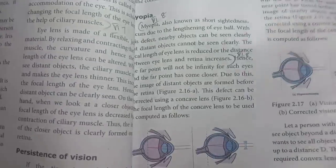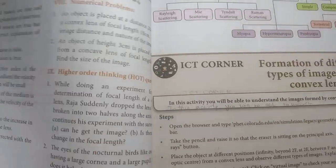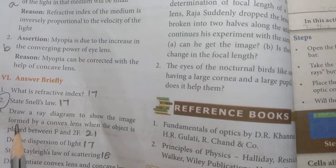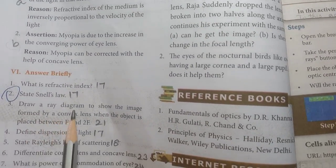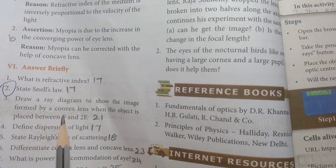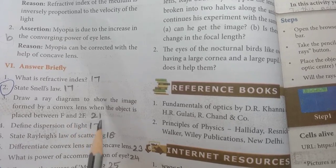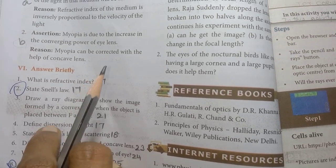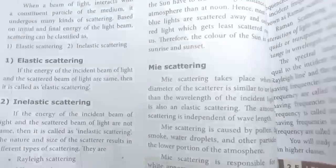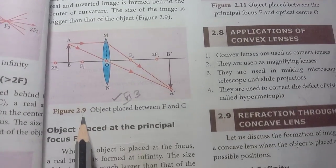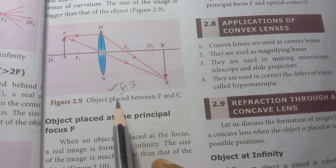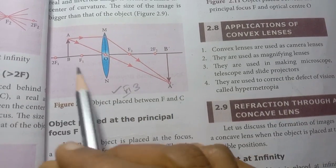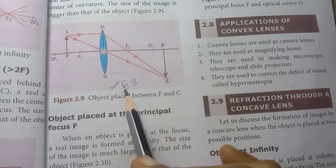Question number 3 — draw a ray diagram to show the image formed by a convex lens when the object is placed between F and 2F. Page number 21. See drawing 2.9 — object placed between F and C. That drawing is the answer.